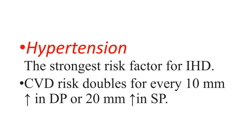Hypertension is the strongest risk factor for ischemic heart disease, so it must be part of any plan to prevent and control IHD — finding those with hypertension and reducing their blood pressure. CVD risk doubles for every 10 mmHg increase in diastolic pressure, or 20 mmHg increase in systolic pressure.